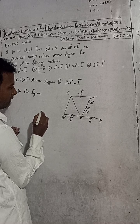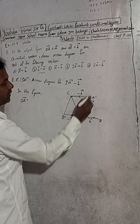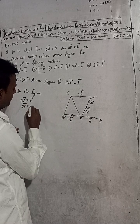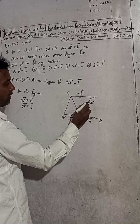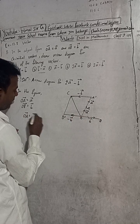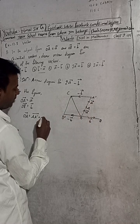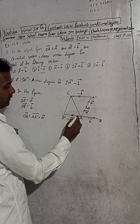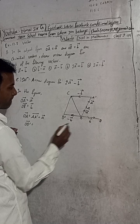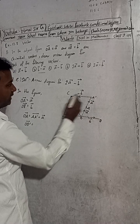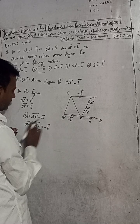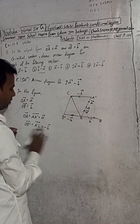From the figure, we can write: OA vector is called a vector. OA and AA dash are equal, meaning a vector. And OB dash vector — OB dash is called the A dash C vector. OB dash is minus b, and A dash C is minus b — that's why both are equal.